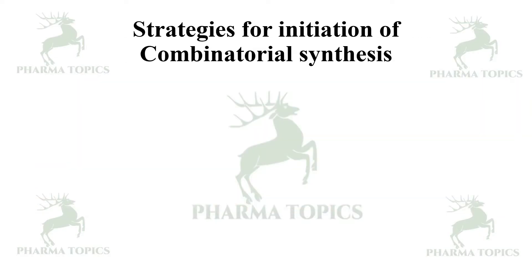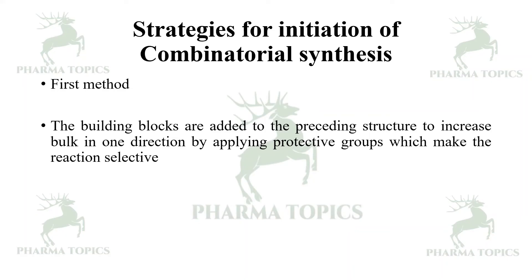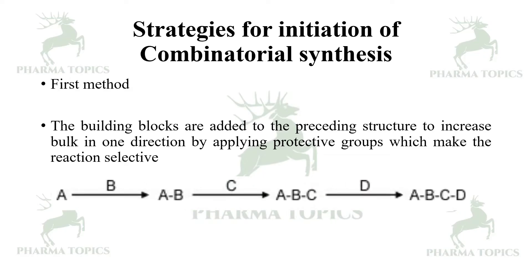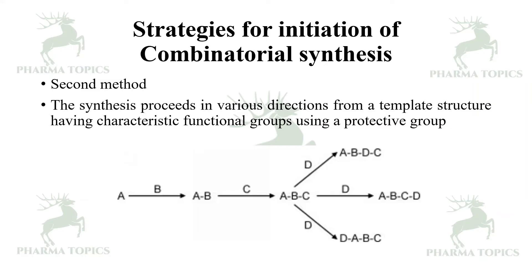The strategies for initiation of combinatorial synthesis: the first method involves building blocks added to the preceding structure to increase the bulk in one direction, applying protective groups to make the reaction selective — A reacts with B, then C is added, then D, continuously one by one. The second method involves building blocks added in different directions, where synthesis proceeds in various directions from the template structure using protective groups.